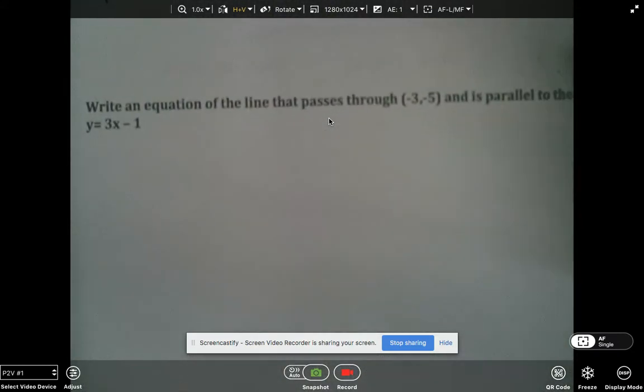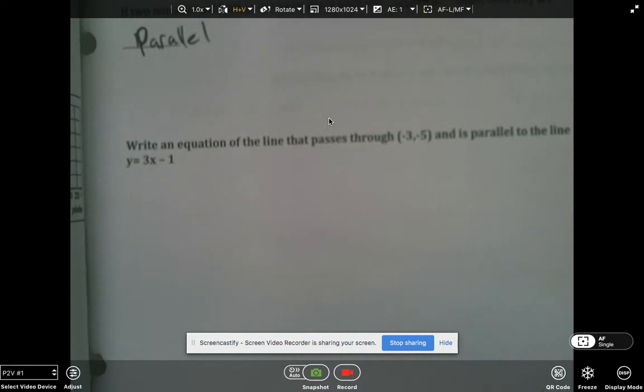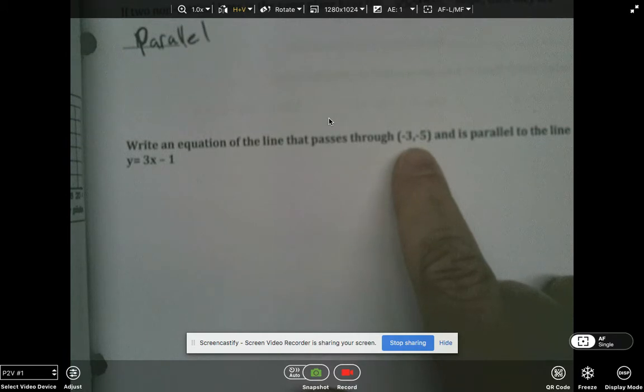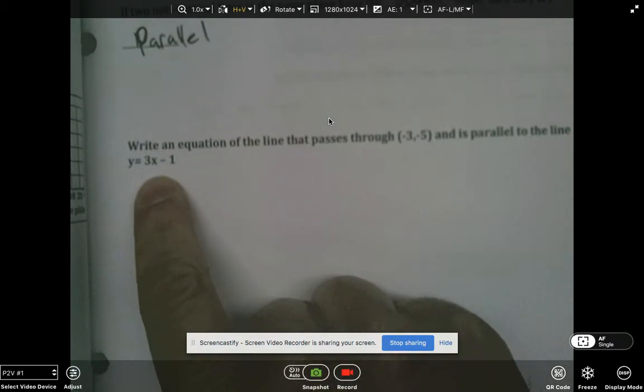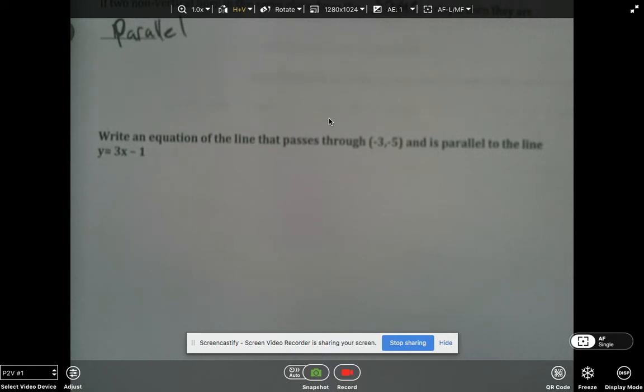Alright, so now this is a little bit different. We want to write an equation of the line that passes through this coordinate and is parallel to this line. So the first thing we'll do here is we're going to get our point-slope going.